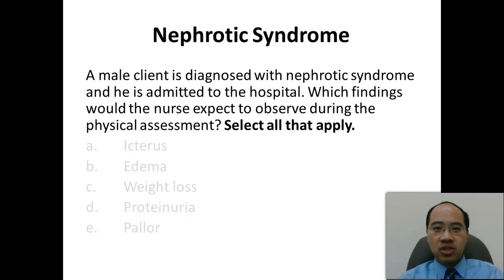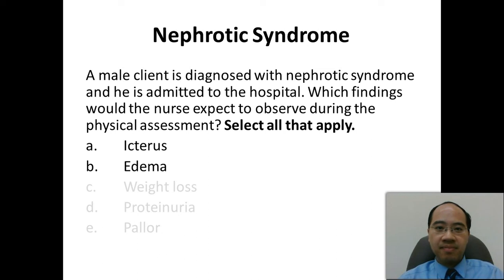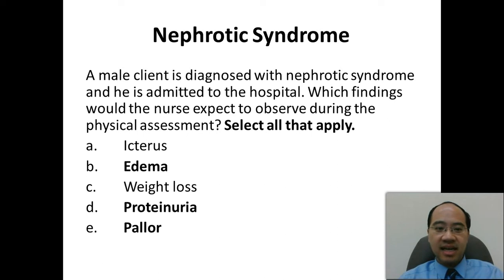Here's a typical type of question related to nephrotic syndrome. A male client is diagnosed with nephrotic syndrome and he is admitted to the hospital. Which findings would the nurse expect to observe during the physical assessment? Select all that apply. A. Icterus B. Edema C. Weight loss D. Proteinuria E. Pallor. The answer is B, D, and E.